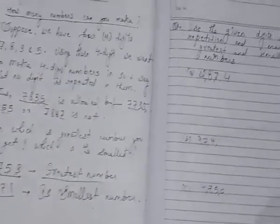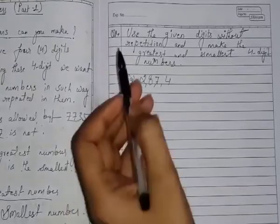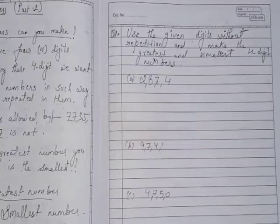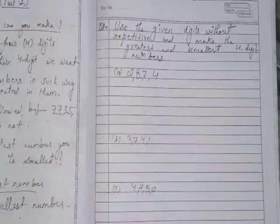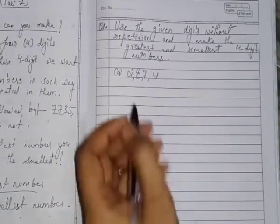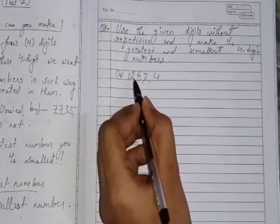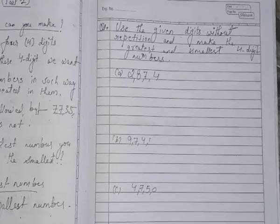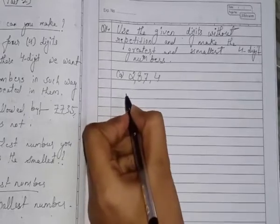Let's practice this again. For example, use the given digits without repetition and make greatest and smallest 4 digit numbers. So what we will do now? Here again we have to do the same thing. First we will see the numbers: 2, 8, 7 and 4. We have to make 4 digit numbers.